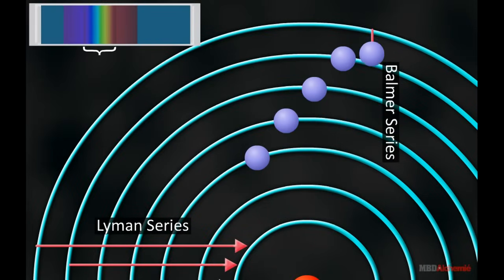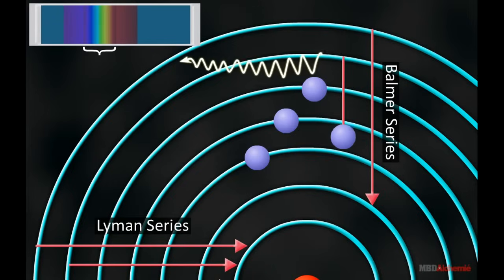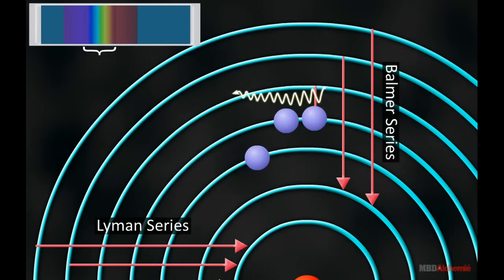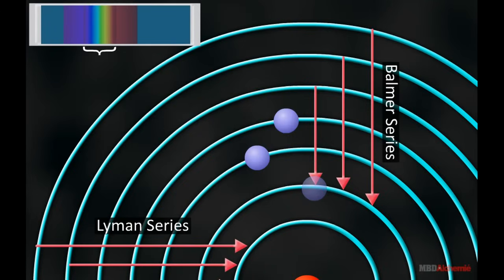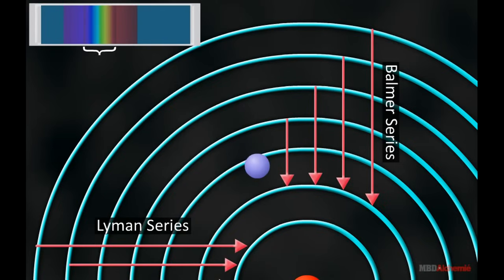When a transition from higher orbits to the second orbit occurs in the atom, the Balmer series is obtained. The values of frequencies obtained in this transition lie in the visible region of the electromagnetic spectrum.